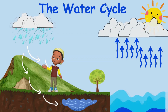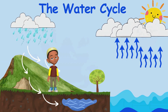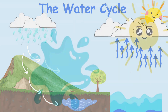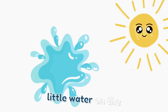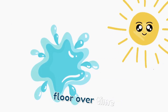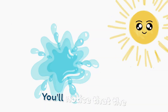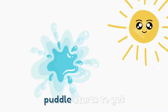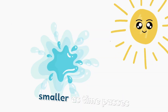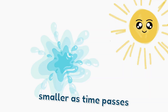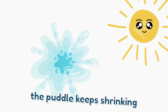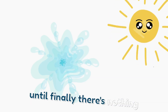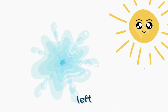Do you know you can see the evaporation process with your eyes? Imagine you spill a little water on the floor. Over time, you'll notice that the puddle starts to get smaller. As time passes, the puddle keeps shrinking until finally there's nothing left.